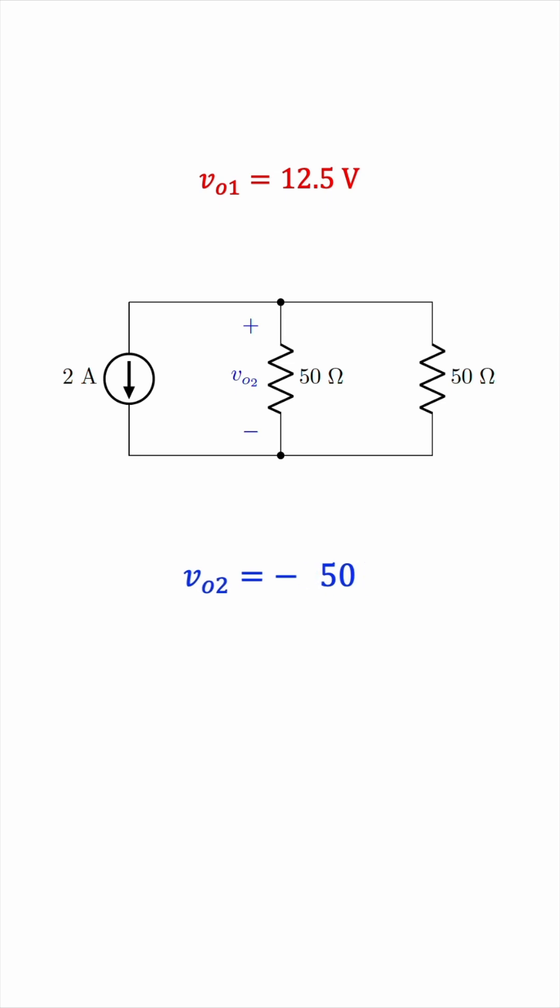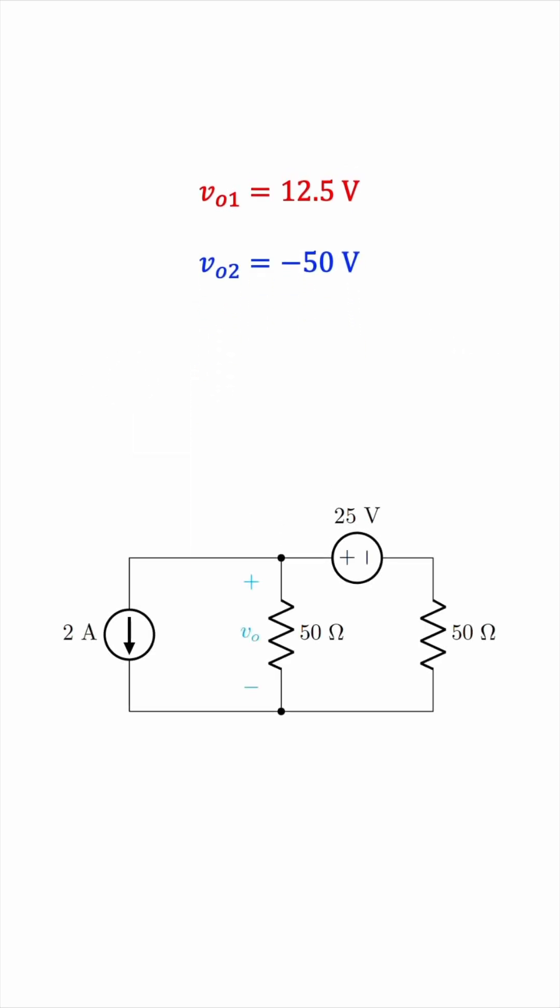And the result will be negative 50 volts. So V0 with the voltage source only is 12.5 volts, and V0 with the current source only is negative 50 volts. So overall, the V0 in the original circuit is the sum of these two voltages taking into account the polarity.